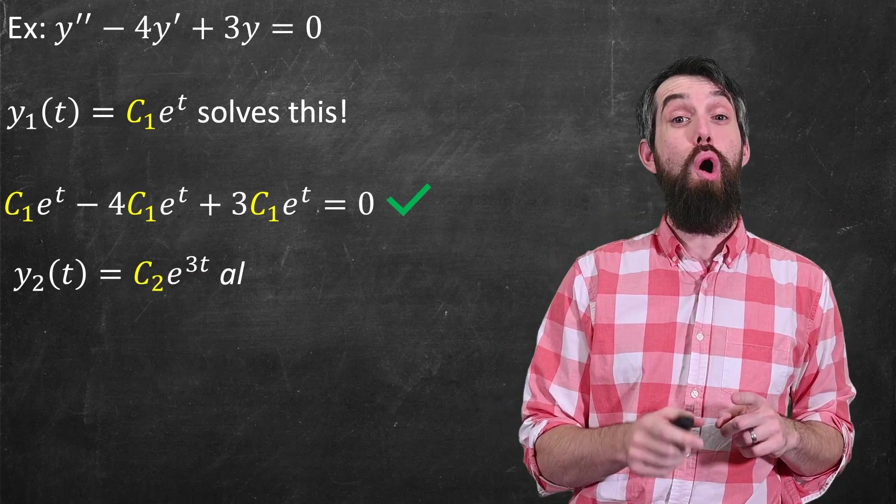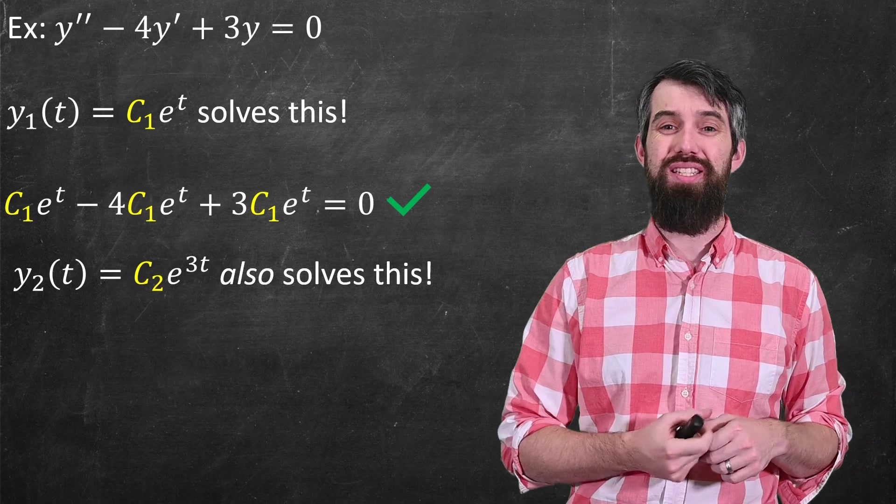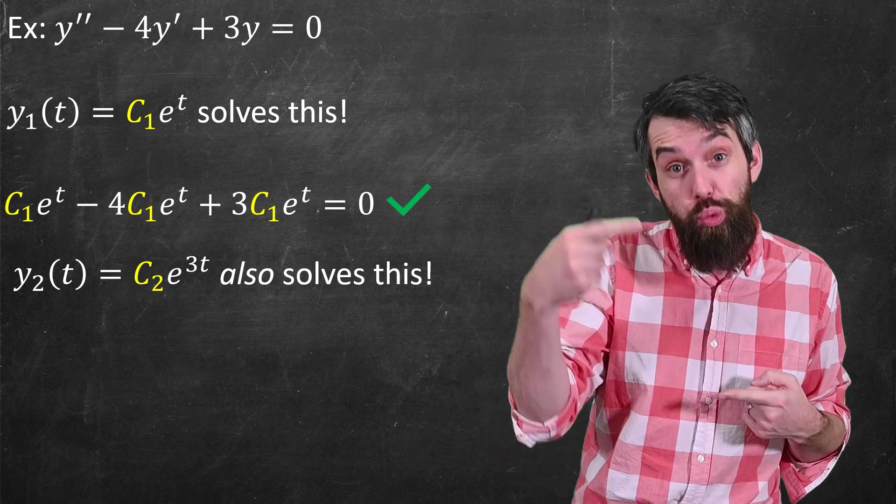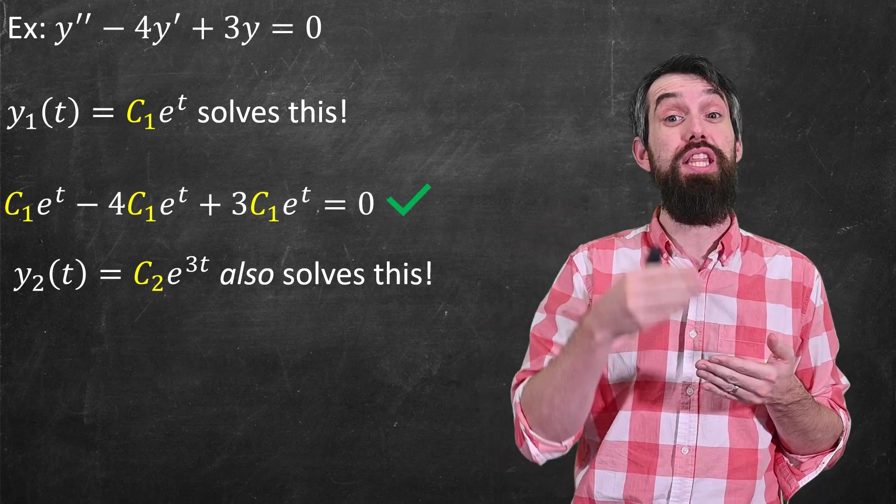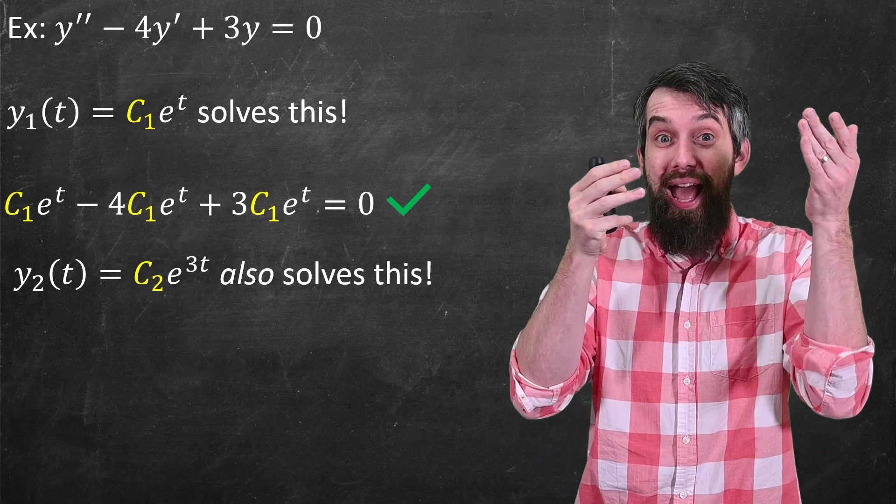Consider what I'll now call y2, which is some constant times e to the 3t. No longer e to the t, e to the 3t. Well, it's also a solution.